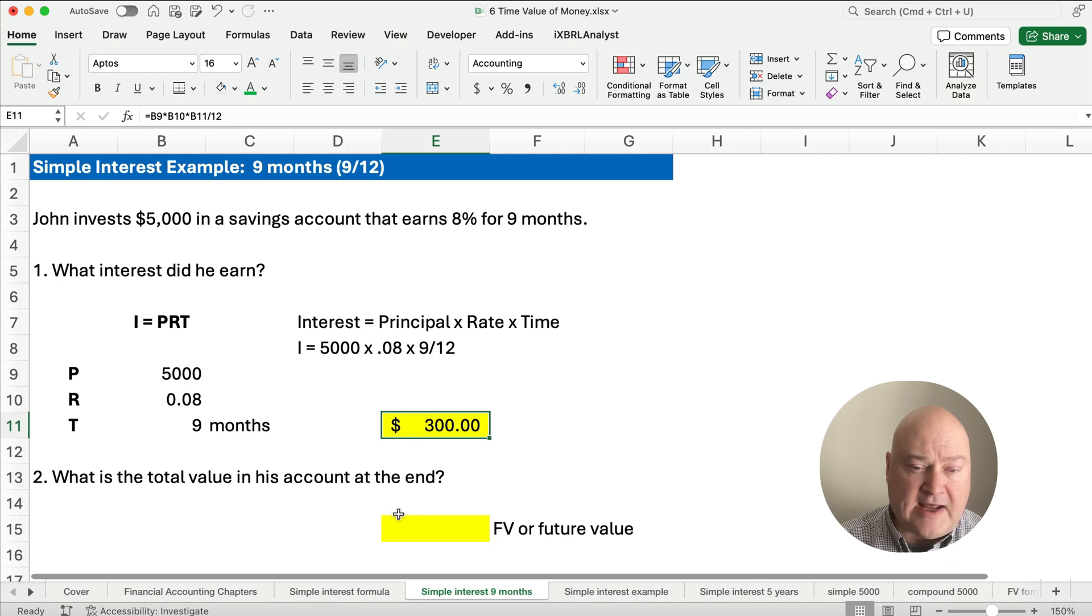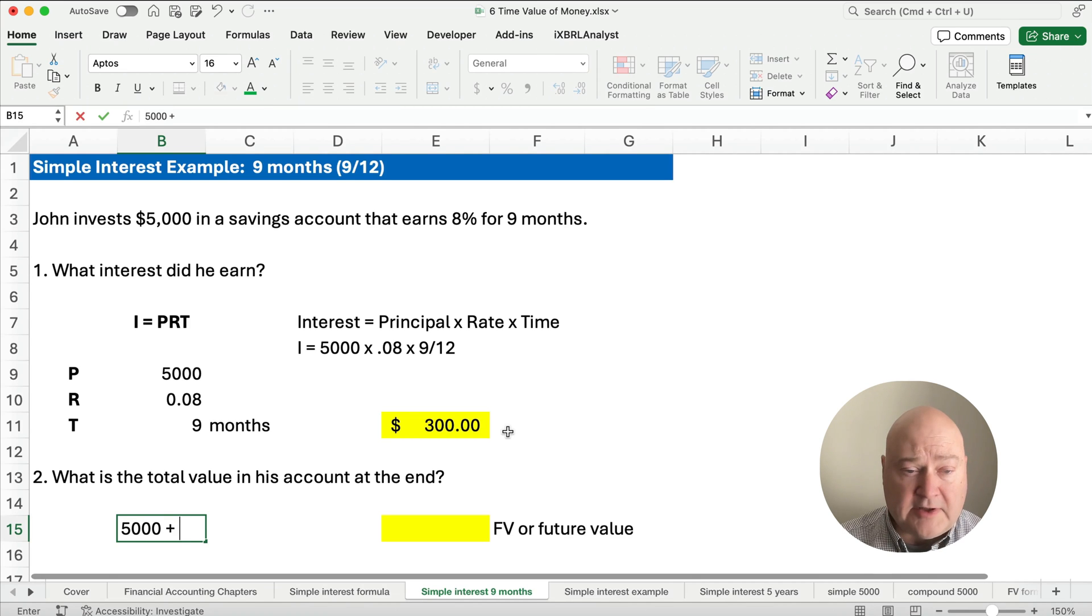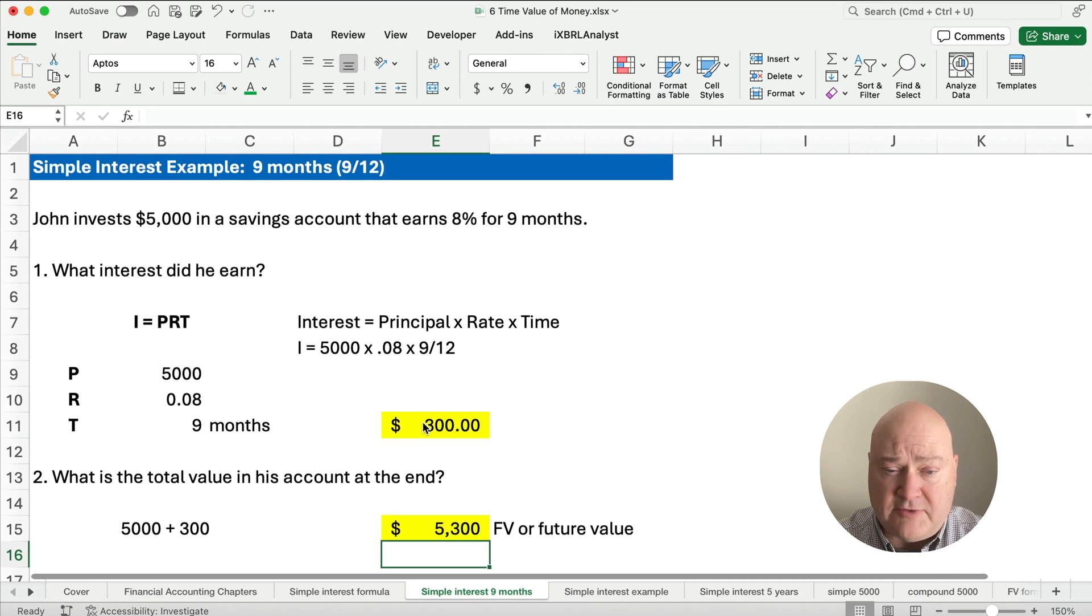It's going to be $300 is our interest for this investment for 9 months, 8%, $5,000. So what is John's total value? It's going to be $5,000 plus the $300 we just calculated. So the amount is $5,300. This is called a future value or FV when we calculate time value of money. If you hang with us until we start talking about compound interest in the next several videos, then we'll call this future value, the $5,300, the account value at the end.